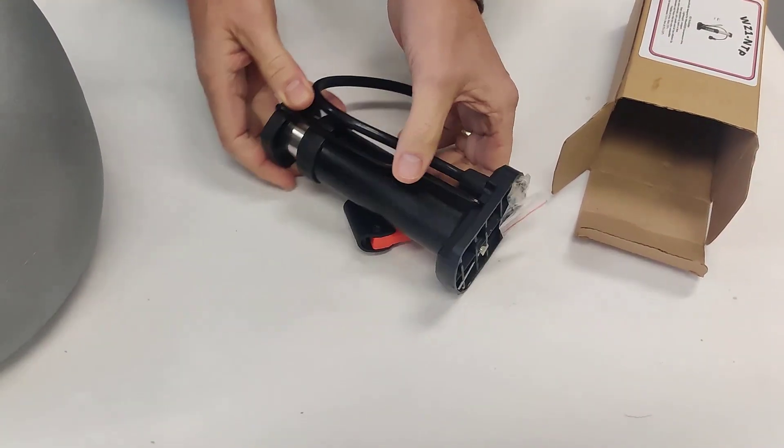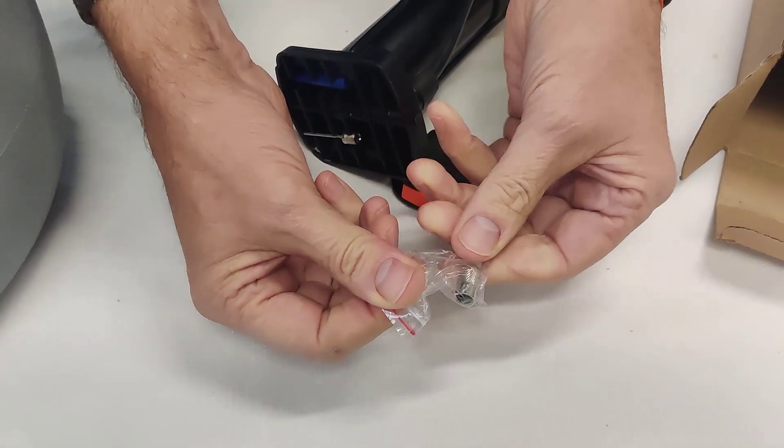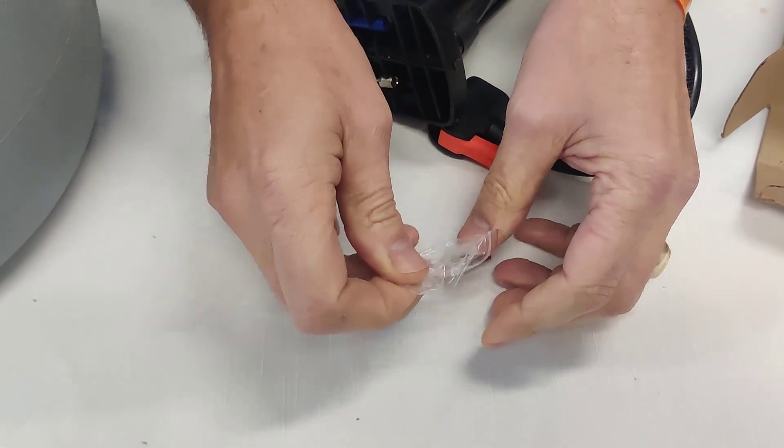When you get it, you're going to want to look underneath and look for these items. This is a valve extender. That will be important.